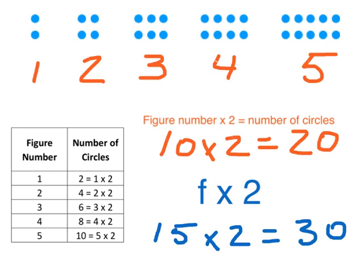So figure number 15 would have 30 circles in it. Figure number 10 has 20 circles in it. Figure number 5 has 10 circles in it. Figure number 2 has 4 circles in it. So we could figure out the number of circles in any figure number by using our expression right here.